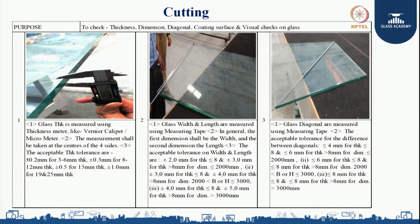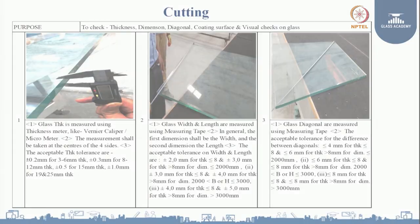Let us understand the diagonal phenomenon. Glass diagonals are measured using a measuring tape. Acceptable tolerances for the difference between diagonals are: less than or equal to 4 mm for thickness up to 8 mm and less than or equal to 6 mm for thickness more than 8 mm when dimension is less than 2000 mm; less than or equal to 6 mm and less than or equal to 8 mm for dimension between 2000 and 3000 mm; and less than or equal to 8 mm and less than or equal to 10 mm for dimension more than 3000 mm.